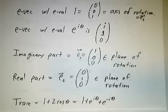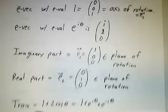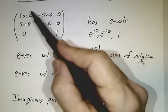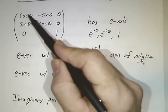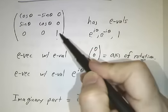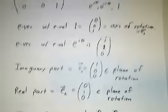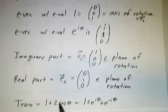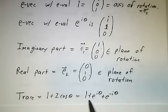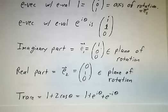Finally, the trace. You just add up the diagonal entries: cosine plus cosine plus 1, that's 1 + 2cosθ. It's also the sum of the eigenvalues: 1 + e^(iθ) + e^(−iθ).